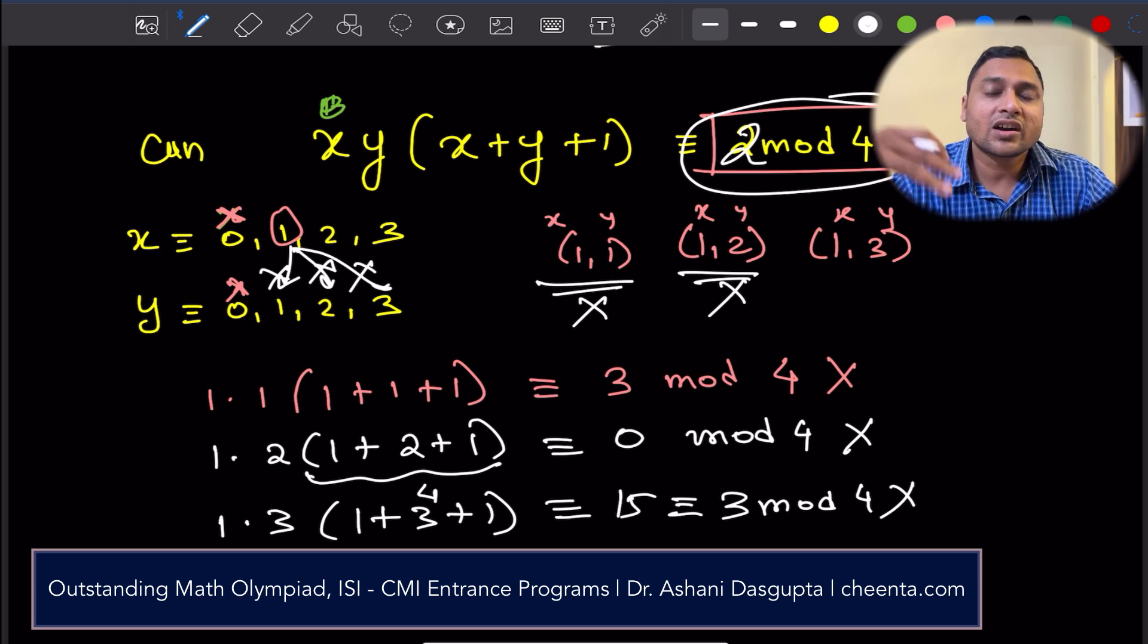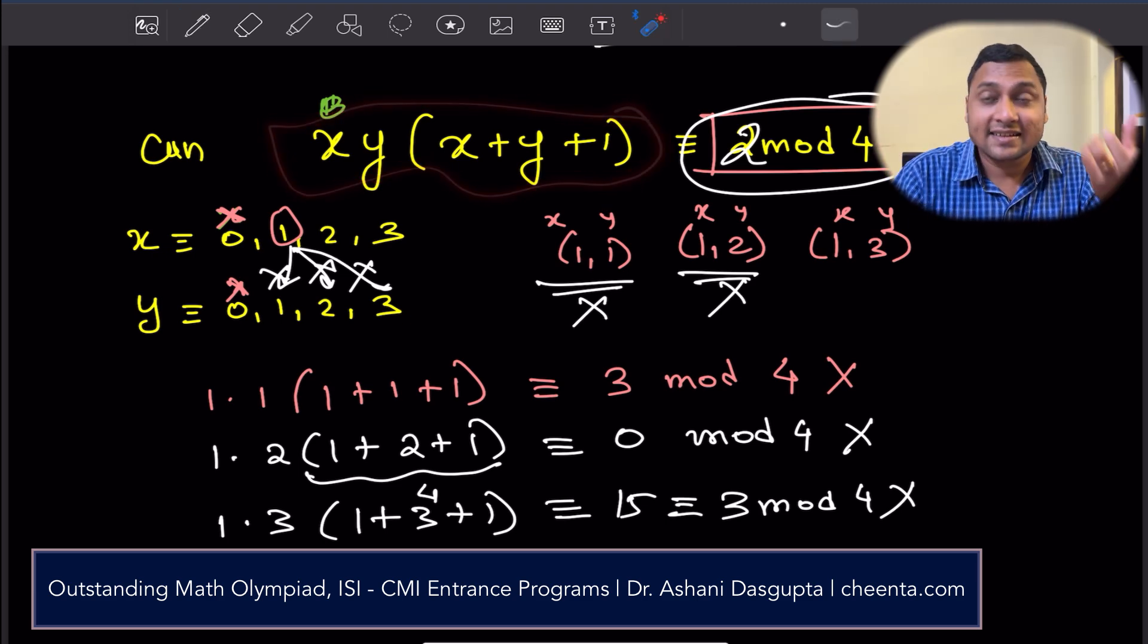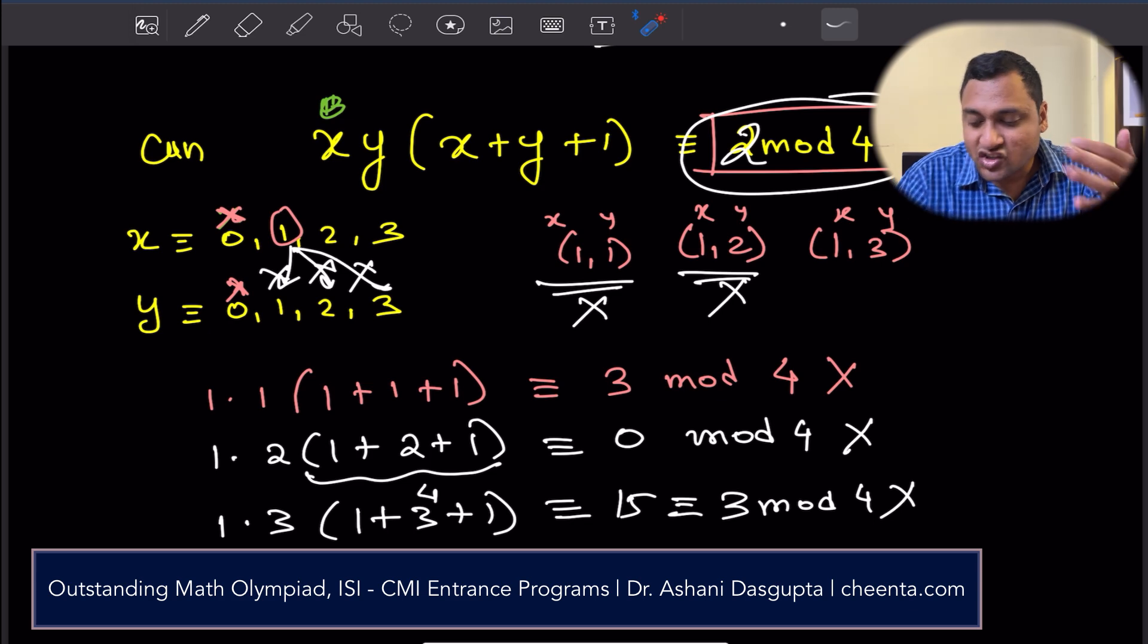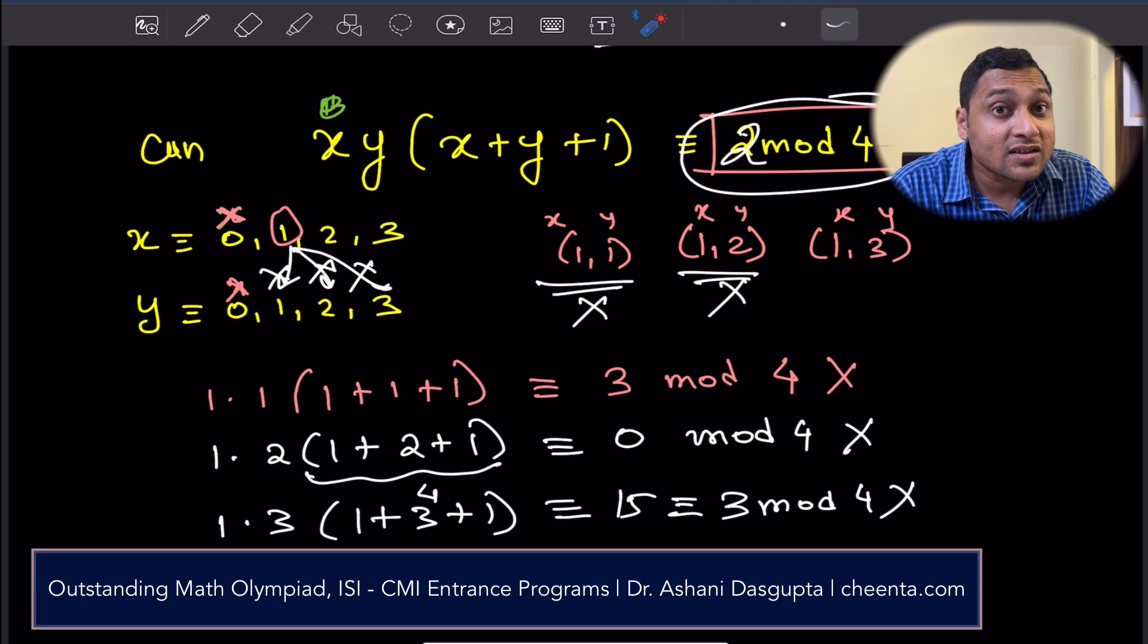So, now you can check with (2,2), (2,3), (2,1) if you want. You really don't have to check (2,1) because you have already checked (1,2) and 2 and 1 are interchangeable. The left-hand side, x and y are interchangeable. So, you have to just check (2,2), (2,3) and (3,3). Three more things. Can you check all of these variants and tell me which one works? Or maybe none of them work? Then there is no solution.